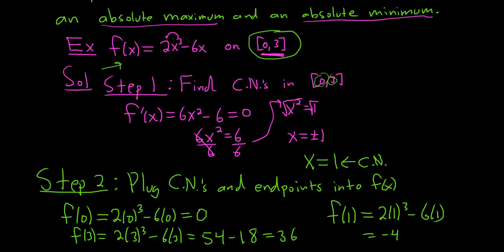All we do now is write the answers down. The biggest number is our maximum, so 36 is our maximum — and in this case the max occurred at an endpoint. Our minimum is −4, the smallest value. And that's it — that's the extreme value theorem and how you use it.